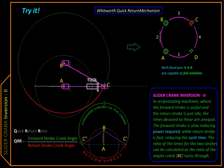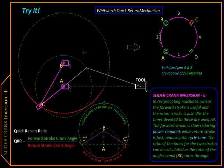Such a mechanism is called a quick return mechanism because it retracts back in a shorter period of time. This is just as well because when the tool is moving forward it is doing something useful, while going backward it is just getting ready for the next stroke, so we don't want to waste our time there.